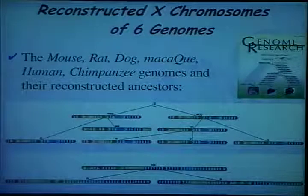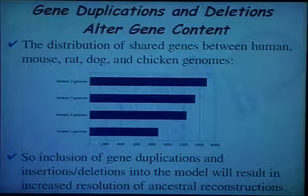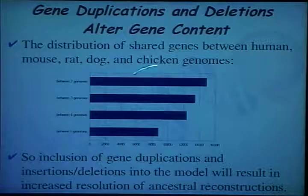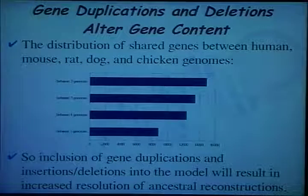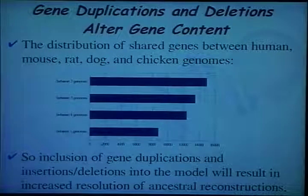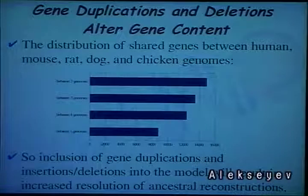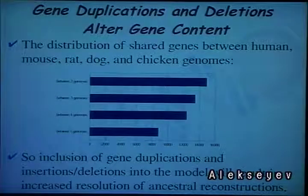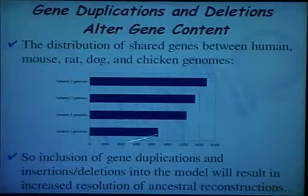We were able to reconstruct ancestral genomes of six mammalian genomes. But the problem I would like to present today is related to gene deletions and gene duplications. If we consider five genomes, the number of genes shared across the genomes drops dramatically — between two genomes we have many shared genes, but for five genomes the number of shared genes is roughly half. All the tools I described before, including MGRA, are limited to genomes having equal gene content, so we would need to throw away a rather large amount of information.